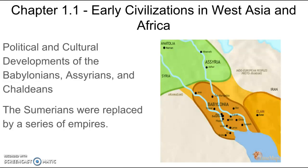The next section of the chapter is entitled 'Political and Cultural Developments of the Babylonians, Assyrians, and Chaldeans.' The Sumerians were replaced by a series of empires. Over the centuries, attempts were made by various groups to conquer this area, among them the Babylonians, the Assyrians, and the Chaldeans. These empires lasted for several centuries and then were replaced by others. There was a lot of warfare involved in the history of this region.